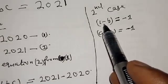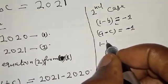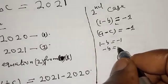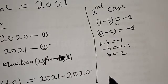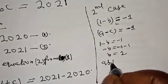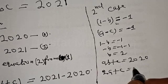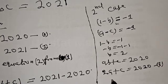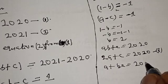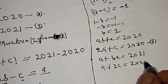Now let's solve the second case. We have 1 minus B equals minus 1, so minus B equals minus 2, therefore B equals 2. And A minus C equals minus 1. Substituting B equals 2 into equation 1 (AB plus C equals 2020) gives 2A plus C equals 2020 — call this equation 3. Substituting into equation 2 (A plus BC equals 2021) gives A plus 2C equals 2021 — call this equation 4.